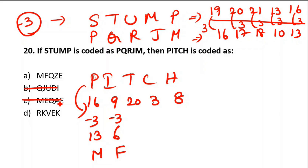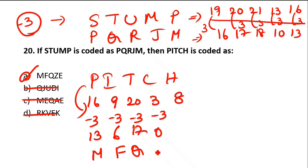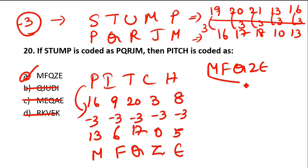So far we have MF, meaning options B, C, D are wrong — Option A is right. Continuing: 20 minus 3 is 17, which is Q. 3 minus 3 is 0, and 0 represents the end of the cycle, which is Z. 8 minus 3 is 5, and 5 is E. So the code is MFQZE — Option A is the answer.